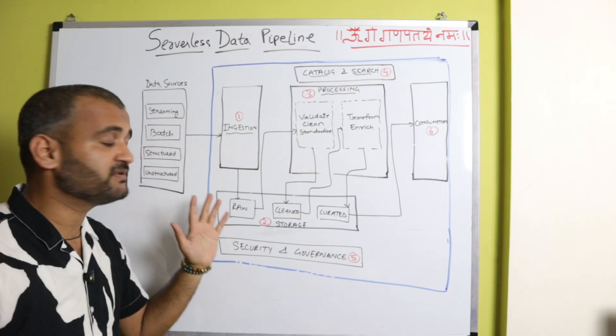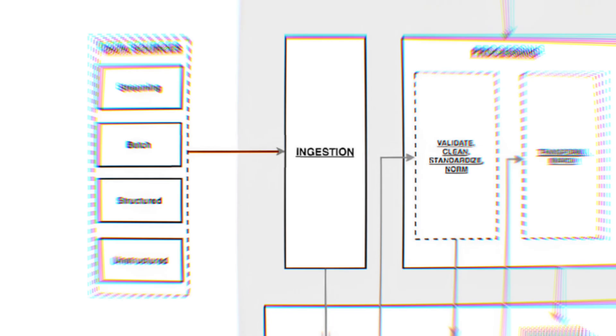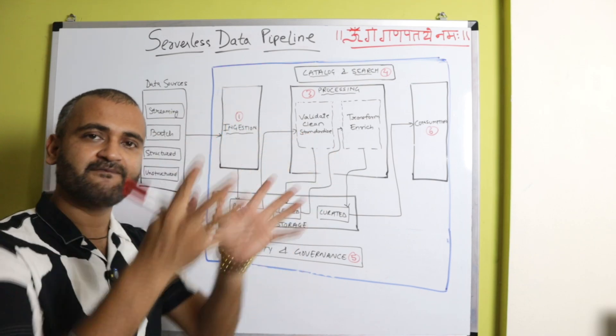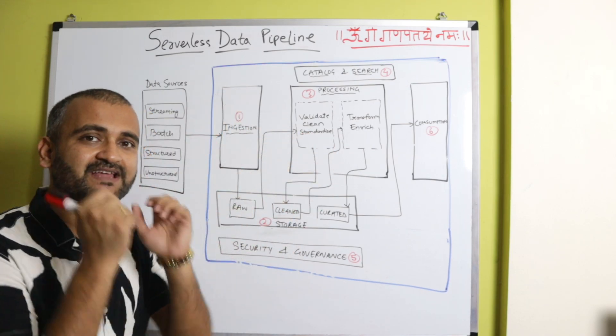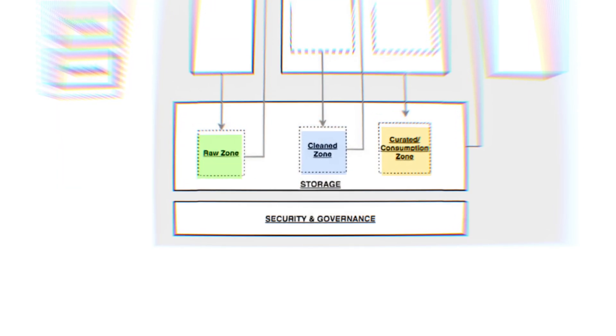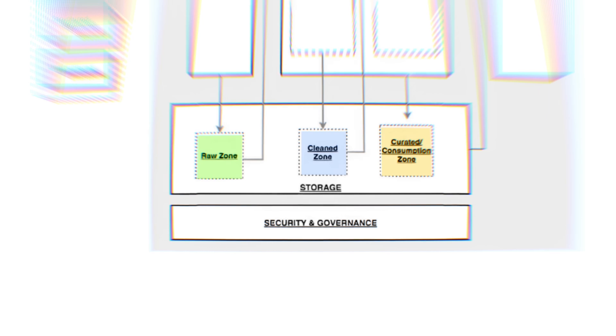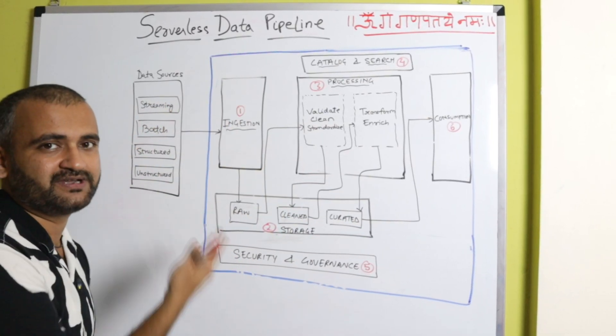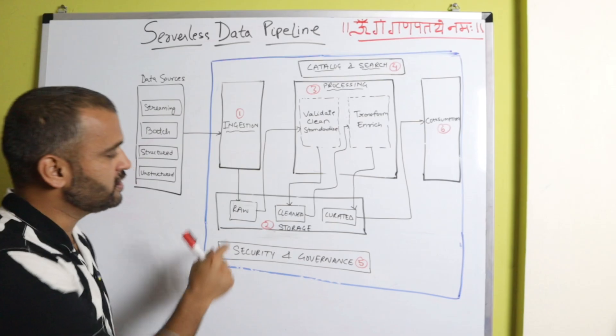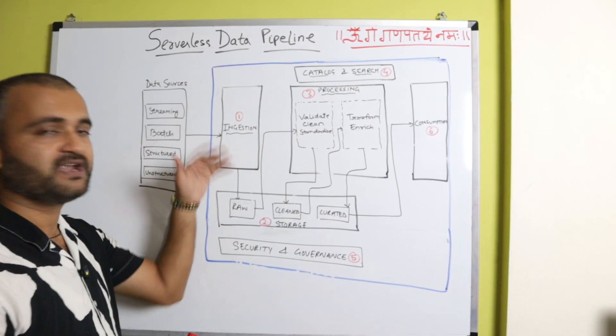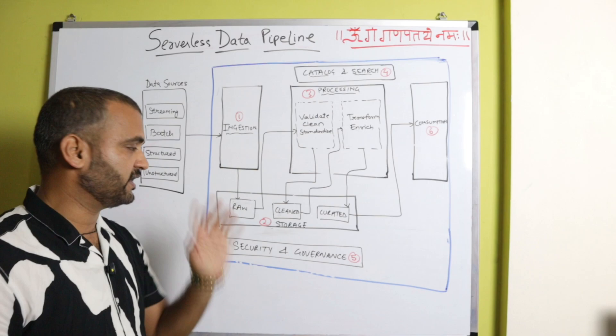So the first thing which happens is you come to the ingestion part. So ingestion is taking the data as a funnel, take everything coming from the source and then storing it into your storage layer. And within your storage layer, you have different zones created. So the first zone or area where you will store the data as it is, it is called as a staging area also, is your raw zone. You will not make any changes, any modifications to the data coming. You will simply start storing it.